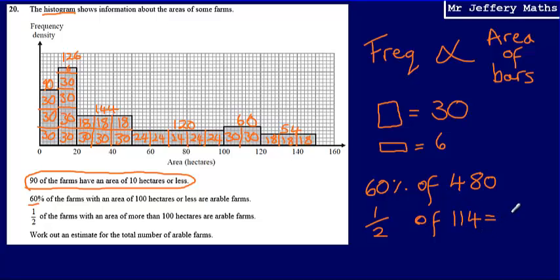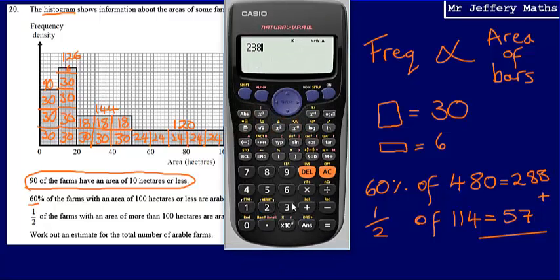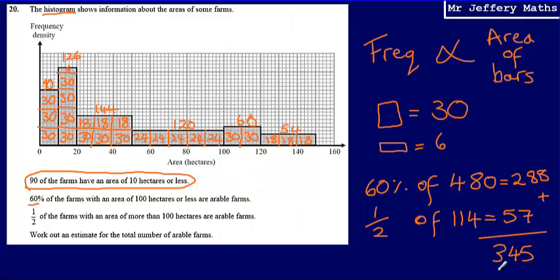Half of 114 is 57. For 60% of 480: 50% is 240, 10% is 48, so 60% is 288. Adding these together: 288 + 57 = 345. So the estimate for the total number of arable farms is 345.